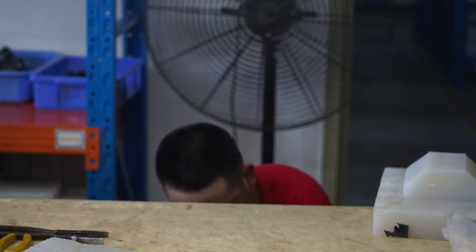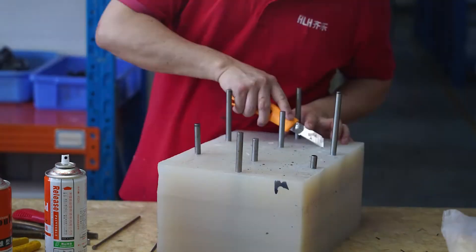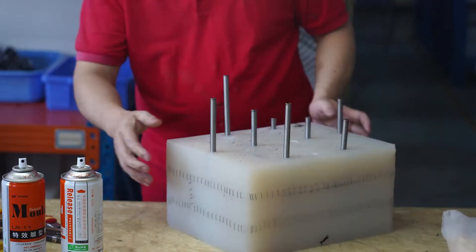Vacuum casting in polyurethane is a quick, versatile and cost-effective solution for creating small series of around 20 to 50 parts.